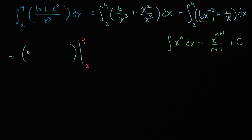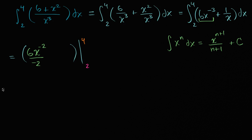Applying that to six x to the negative third power: we take x to the negative three plus one, which is x to the negative two, and divide by negative two. With the six out front, that's the antiderivative of six x to the negative three.